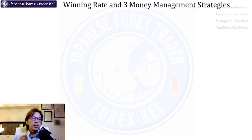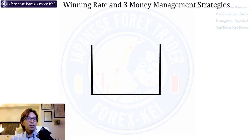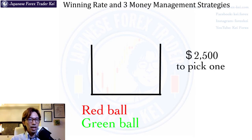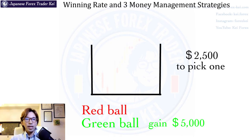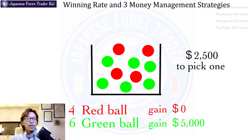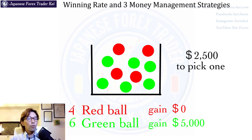To better understand this, imagine there's a game with a box. In that box, there are two kinds of balls: red and green. Every time you pick, it costs $2,500. When you pick a green ball, you get double — you get $5,000. When you pick a red one, you get nothing and lose $2,500. In that box, there are 6 green balls and 4 red balls, and every time you pick a ball, you return it to the box. So the chance of picking a green one is 60%, and picking a red one is 40%.